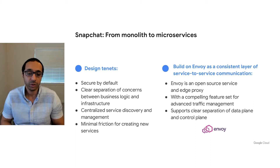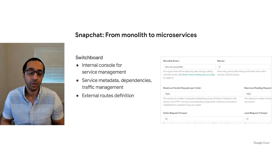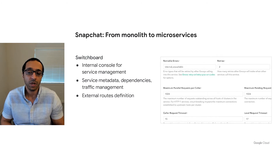A few compelling features attracted us to Envoy: the advanced traffic management it offers, and the XDS APIs that provide a clean separation between the data plane — which handles forwarding and routing — and the control plane, where service discovery and traffic management configs are pushed to the data plane elements. We started by building an internal console called Switchboard, where service owners can create a new service through a clean and simple UI console, configure Envoy settings via UI instead of raw YAML, and manage retries, circuit breaking, and traffic splitting.